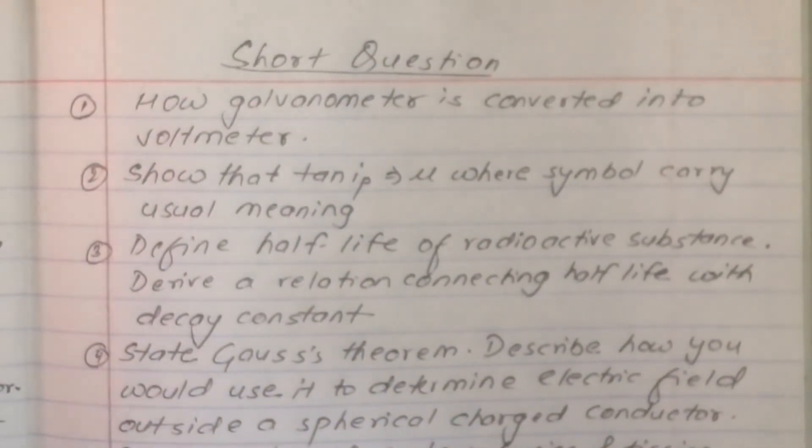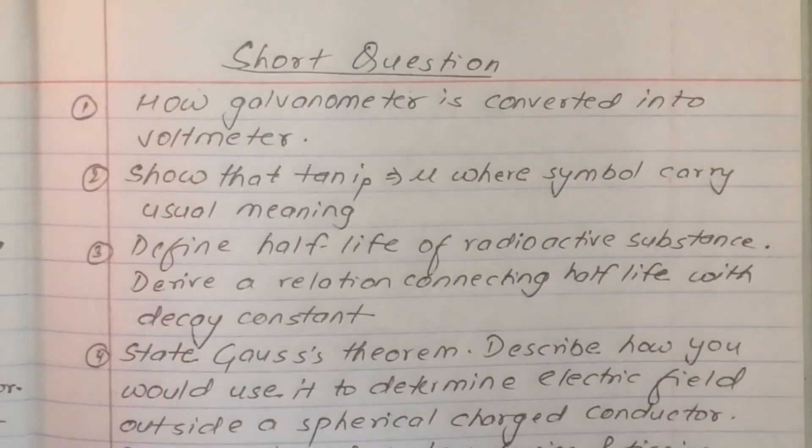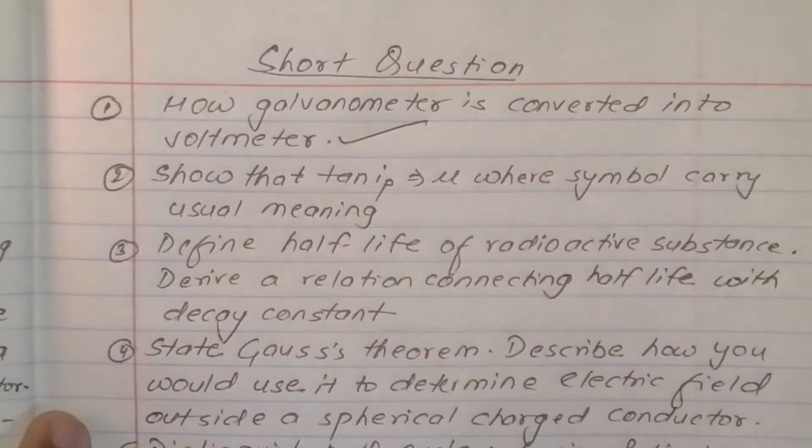The short question is: How is galvanometer converted into voltmeter?